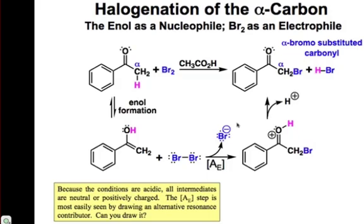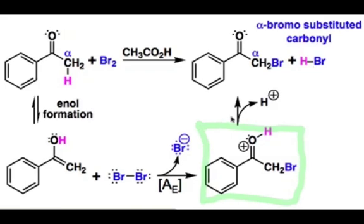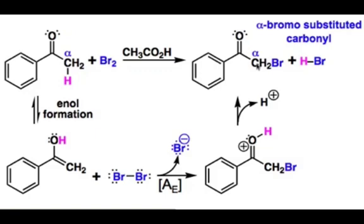This addition leads to the oxocarbenium ion intermediate, and then after proton transfer, mediated by either the conjugate base of the acid present or Br⁻, we're left with the halogenated ketone product. For all but the most reactive of ketones, this reaction under acidic conditions can be stopped at the monohalogenation stage.